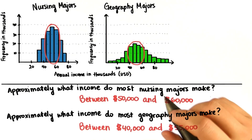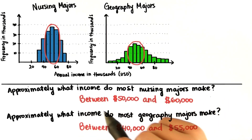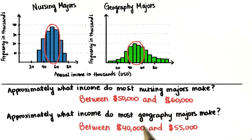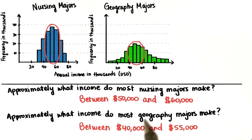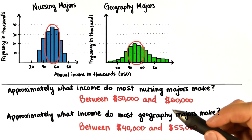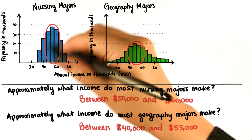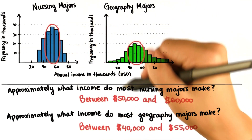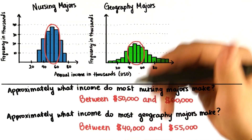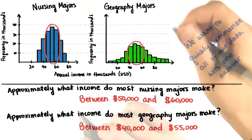In the last quiz, we determined an interval estimate of the salary you're likely to make with either major. In the case of nursing majors, between 50,000 and 60,000. And in the case of geography majors, between 40,000 and 55,000. But ideally, we want one number that describes the entire data set. This allows us to quickly summarize all of our data.